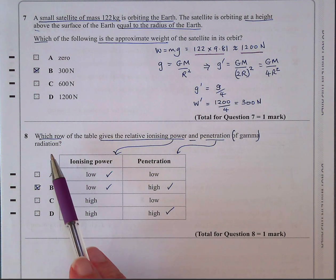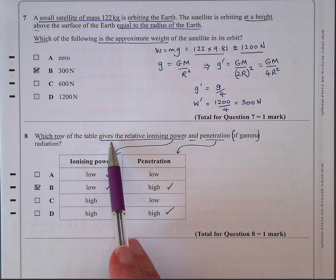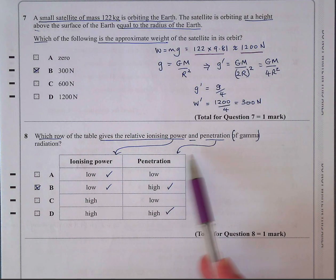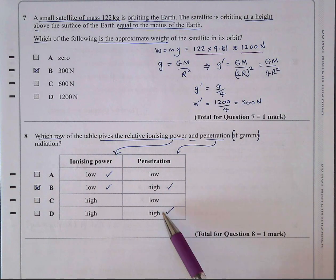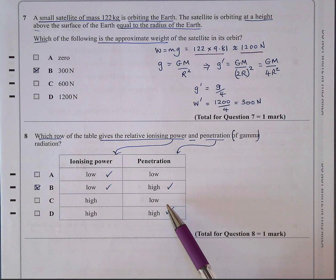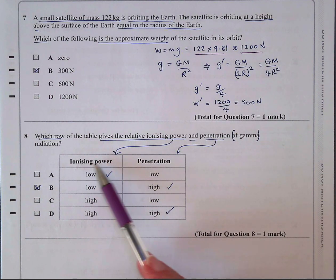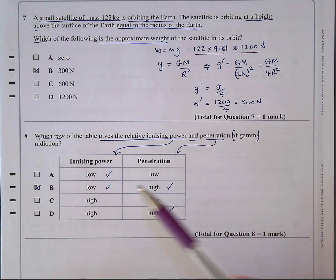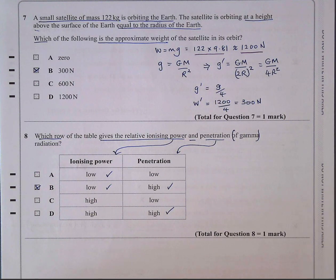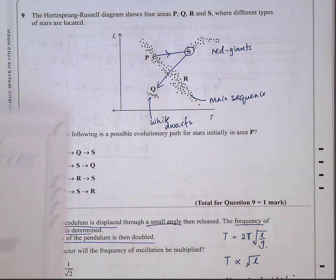Then, which row of the table gives a relative ionizing power and penetration of gamma radiation. So penetration is very high for gamma. It's the most penetrating of the alpha, beta, gamma radioactivity. And the ionizing power is low. Remember, alpha has the highest ionizing power. So the ones with the line, the row with two ticks wins. And it's B.